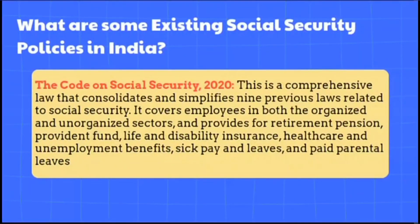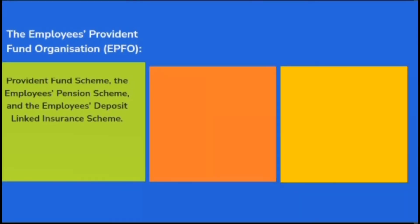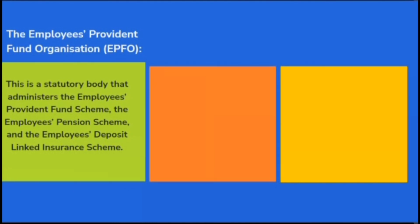What are some existing social security policies in India? The Code on Social Security, 2020 is a comprehensive law that consolidates and simplifies nine previous laws related to social security. It covers employees in both the organized and unorganized sectors, and provides for retirement pension, provident fund, life and disability insurance, healthcare and unemployment benefits, sick pay and leaves, and paid parental leave. The Employees' Provident Fund Organization (EPFO) is a statutory body that administers the Employees' Provident Fund Scheme, the Employees' Pension Scheme, and the Employees' Deposit Linked Insurance Scheme, providing retirement pension, provident fund, and life and disability insurance to employees in the organized sector.